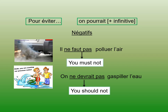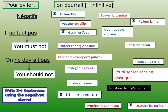Write those constructions down: 'il ne faut pas' means you must not; 'on ne devrait pas' means you should not. You can write the examples if you'd like, but you don't need to. Once you're ready, let's look at this in context. You're now going to write three to four sentences using the negatives. For example: pour éviter le réchauffement de la planète, il ne faut pas polluer l'air. Or: pour éviter le réchauffement de la planète, on ne devrait pas utiliser la voiture — or on ne devrait pas trop utiliser la voiture. Write three to four sentences where you are saying to avoid something, you must not or you should not do something.